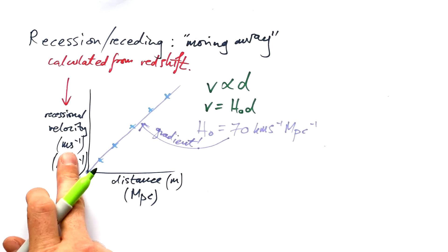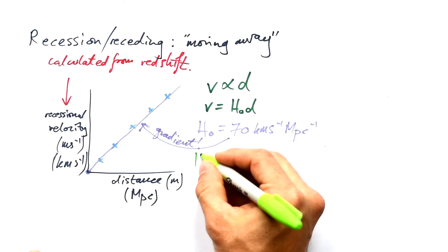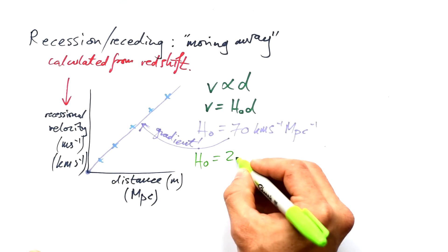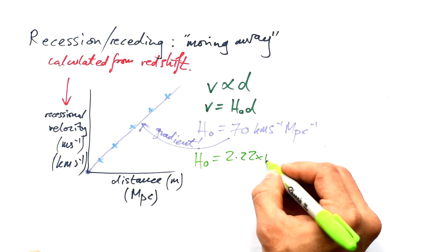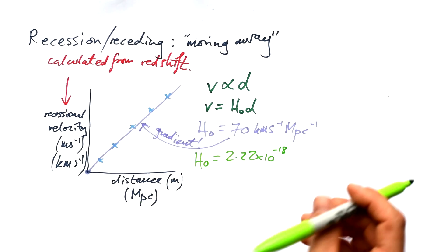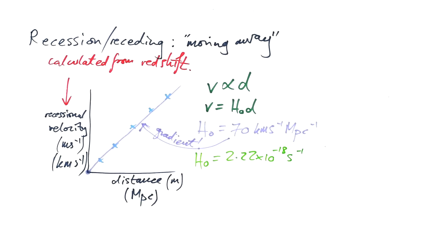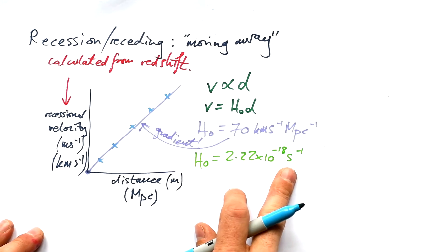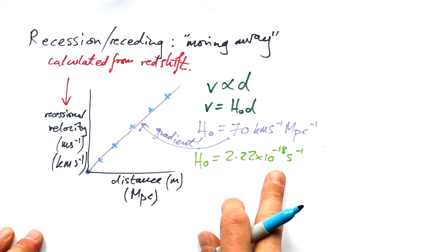So that's it in those units, but what if we were to use meters per second and meters? Well, it actually comes out as 2.22 times 10 to the minus 18. And what's the unit of that going to be? Whereas meters per second divided by meters, the meters cancel, and we end up with just seconds to the minus one. Bit of a weird unit, it's actually the same unit as Hertz.